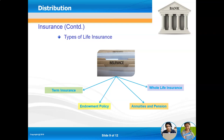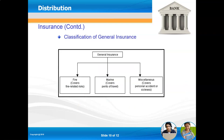Second-to-die policy: husband and wife both take a joint insurance policy. Since women are now financially independent with their own savings, this policy pays only when both have passed away, so their children receive the sum assured. General insurance categories include fire cover for fire-related risks, marine cover for travel by air or ship, and miscellaneous cover for personal accidents and sickness.